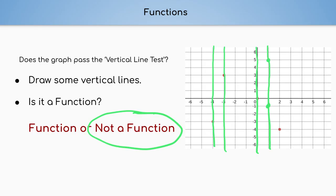Just to summarize: when we have a graph, we determine if it is a function by using the vertical line test. The vertical line test states: if I draw a vertical line and it goes through the graph at exactly one point, it is a function. If I draw a vertical line and it goes through the graph at more than one point — two points, three points, anything more than one point — then it is not a function. Thank you for watching this video.